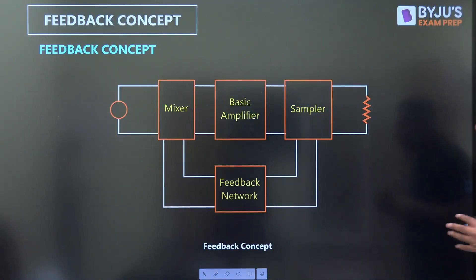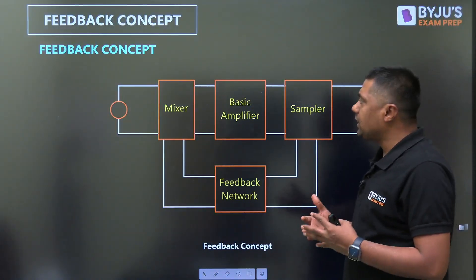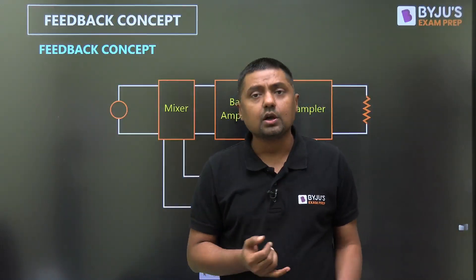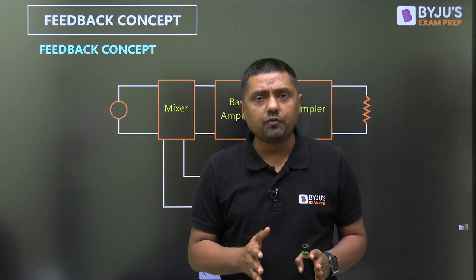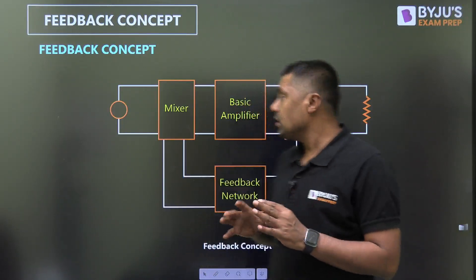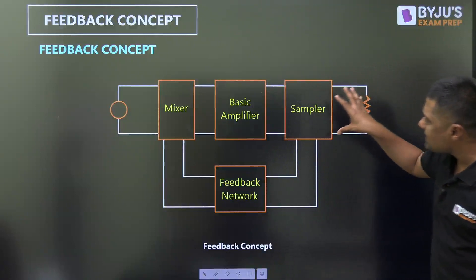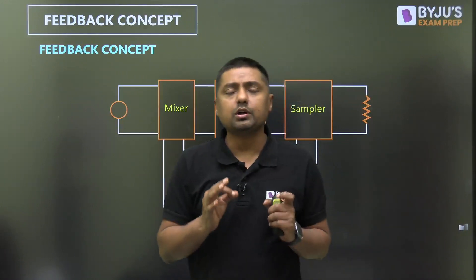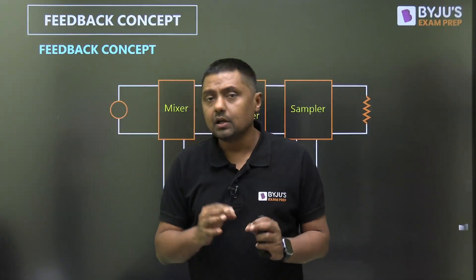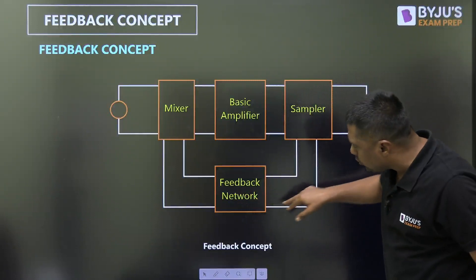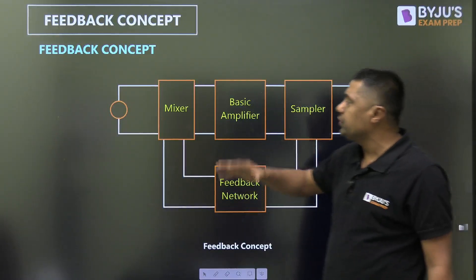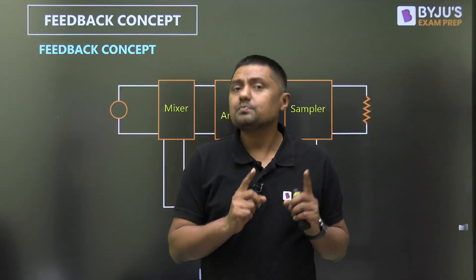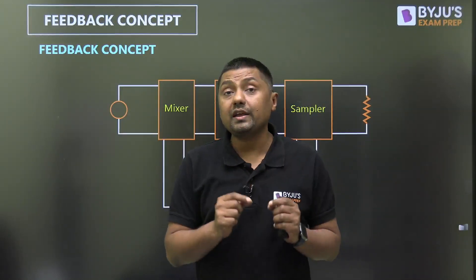First of all, what is the feedback concept? When we are providing feedback, this is the basic amplifier. As you know, there are four types of basic amplifier: voltage amplifier, current amplifier, transconductance, and transresistance. At the output we are sampling the signal — there are two types of sampler: voltage sampler and current sampler. Then we pass that sampled signal through the feedback network and mix it with the input. There are two types of mixing: voltage mixing and current mixing.